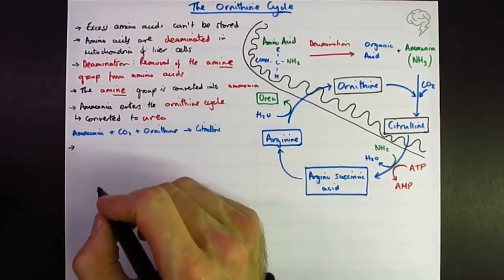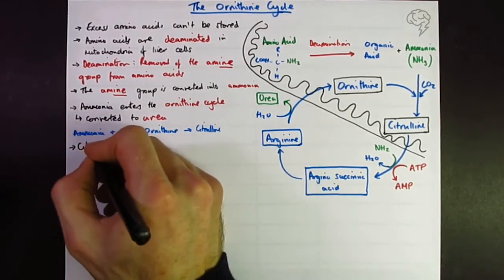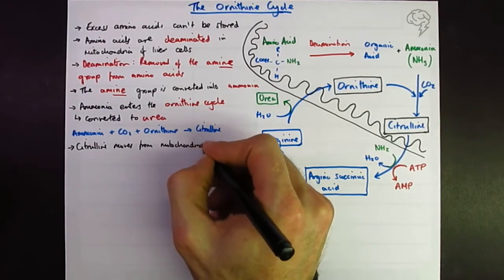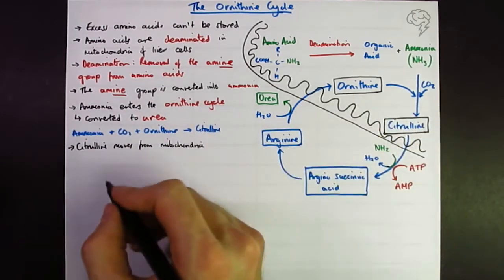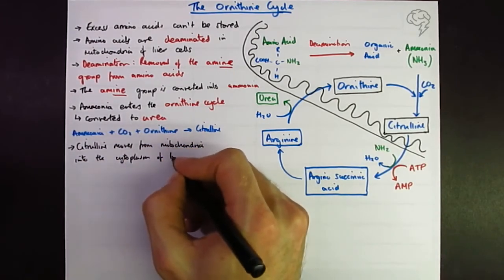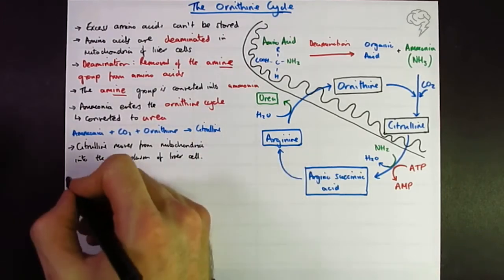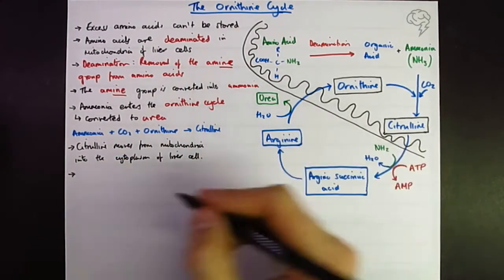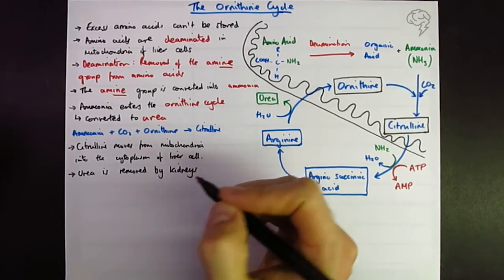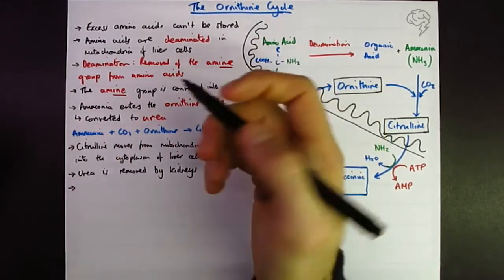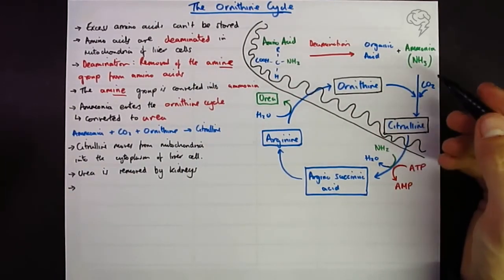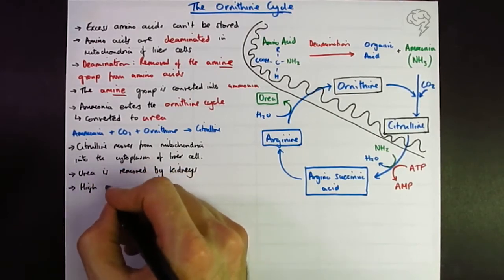Next up, quite important: citrulline moves from the mitochondria into the cytoplasm of the liver cell. Also, urea is removed by the kidneys. There are marks on the ornithine cycle which is more of a kidneys question: high concentration of urea in the blood decreases the water potential of the blood, which increases water reabsorption by the kidneys.